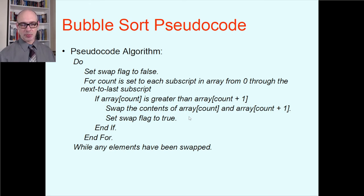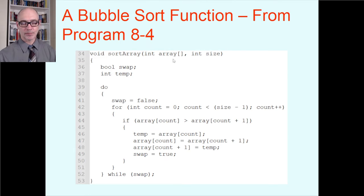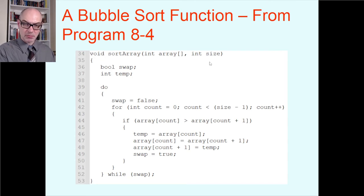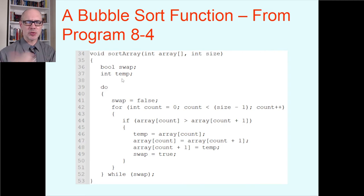Let's translate this to C++. Here is a function called sort array — it's a void function, not returning anything. You pass the array you're interested in sorting; as always in C++, that takes two parameters: the array itself and the size. So the function knows where the array starts and where it ends. In this case it's an integer array, but you could modify it to sort all kinds of arrays with any data type. Here's the Boolean flag called swap, and here's the temporary variable you need when making a swap — the third variable for that copy job.